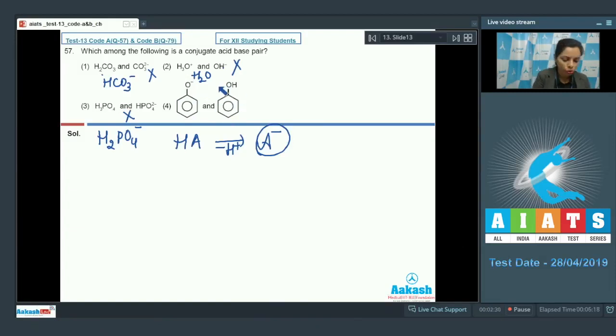We have this phenoxide ion. Along with that, phenol is there. Now, from the phenol, if you remove proton, it gets changed into phenoxide ion. This way, it means, these two are representing the conjugate acid-base pair. On that basis, I will choose option 4 as the correct answer.